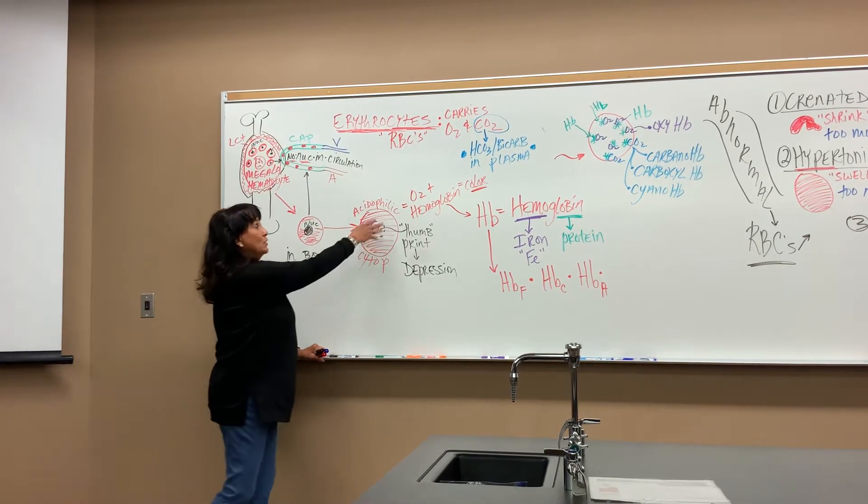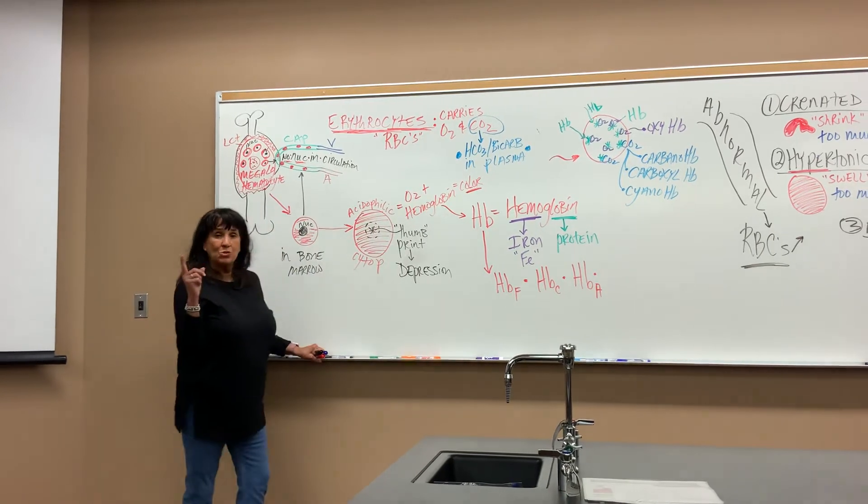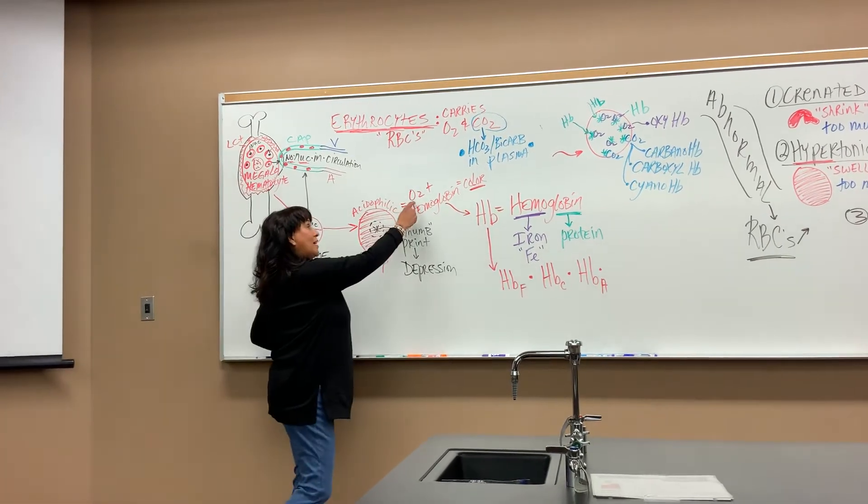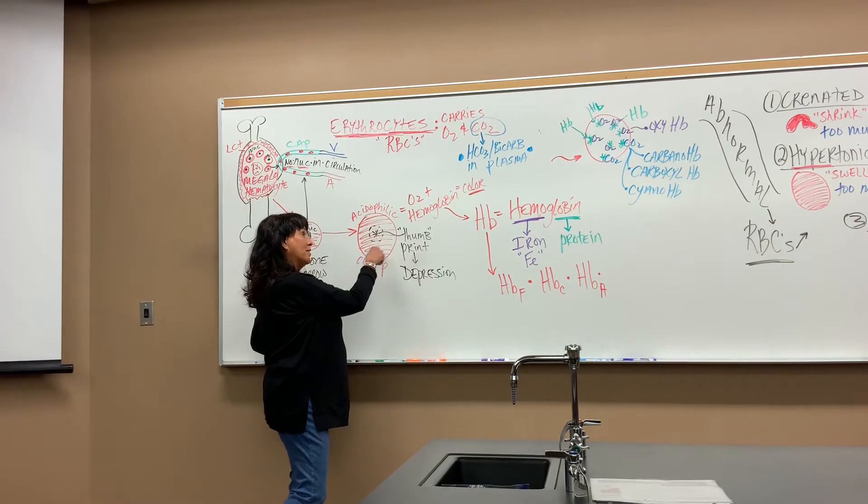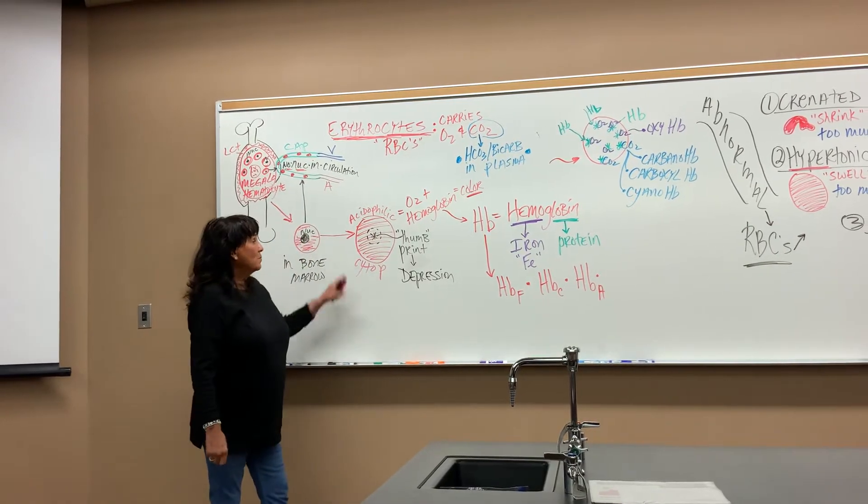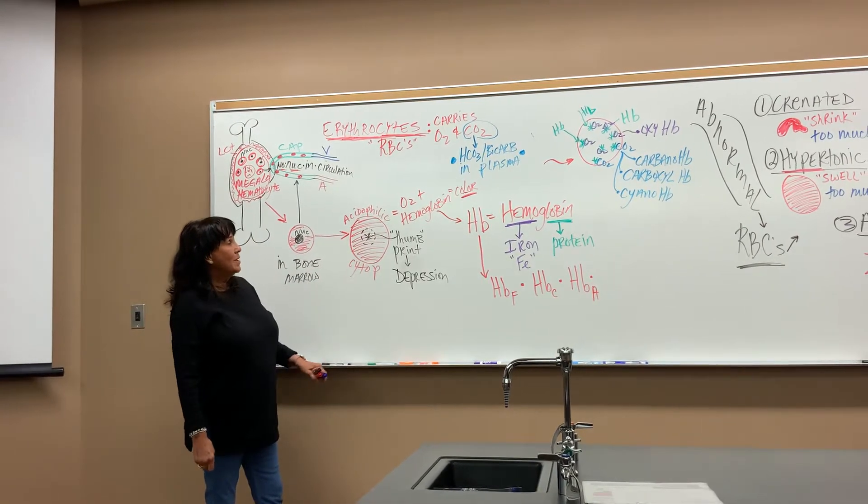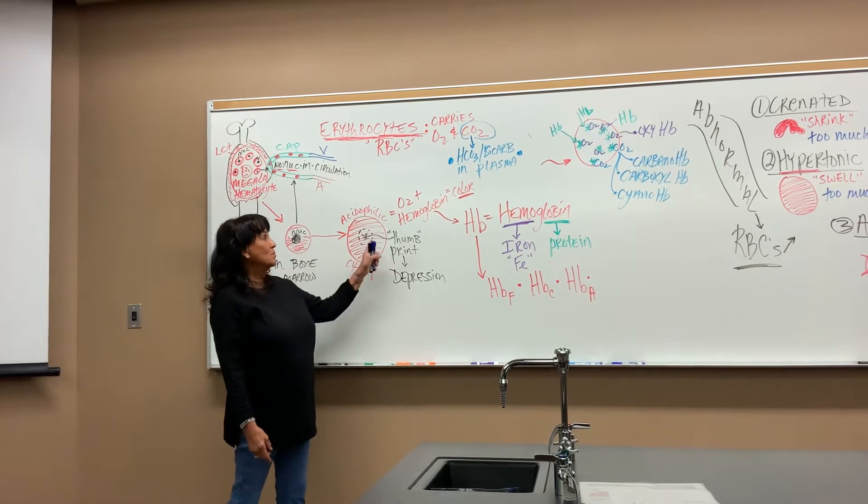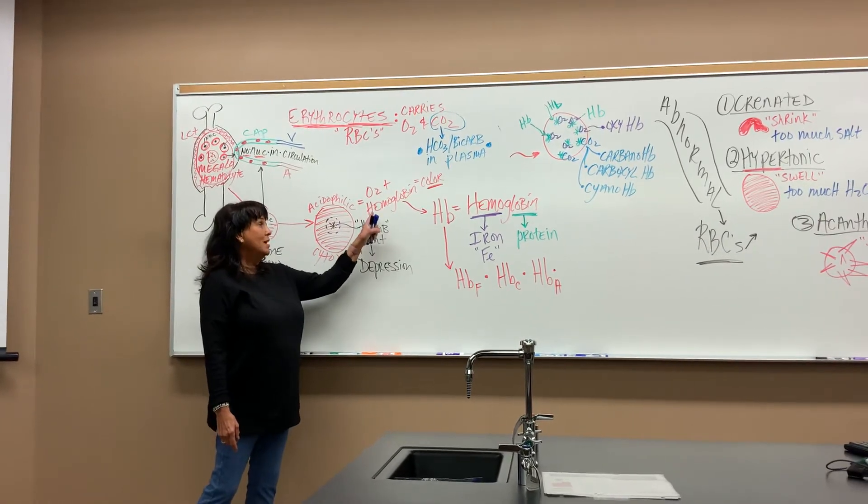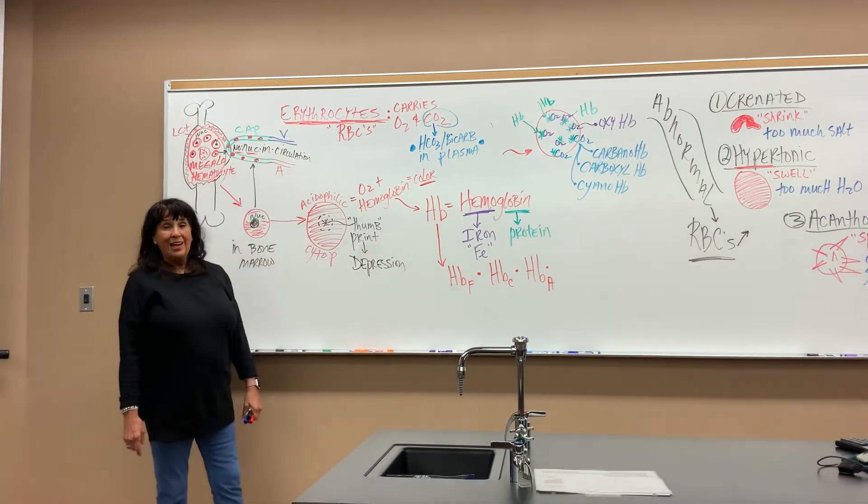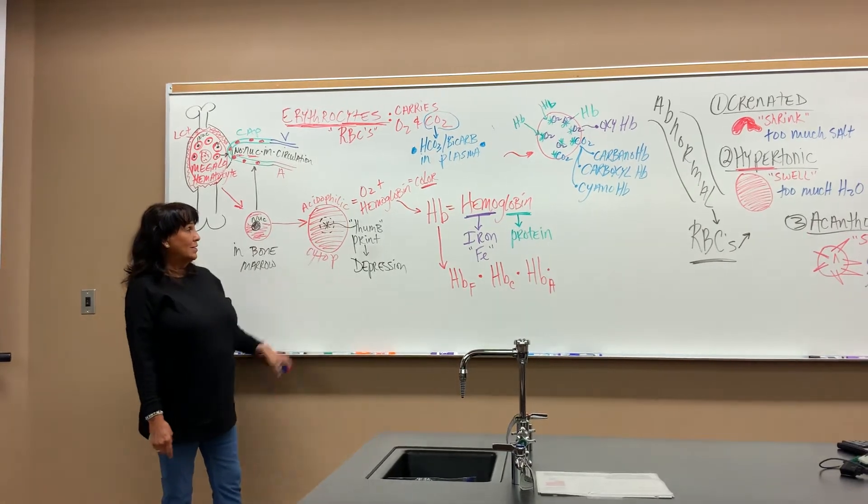The color of the cytoplasm is due to two things. The oxygen level being carried on the cell membrane and in the cytoplasm. And then the second thing that determines the color of the cytoplasm is the amount of hemoglobin dissolved in the cytoplasm.